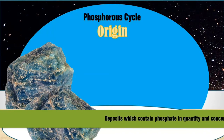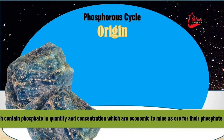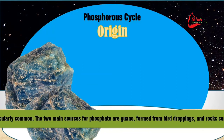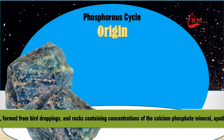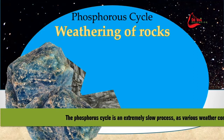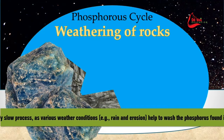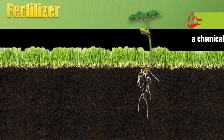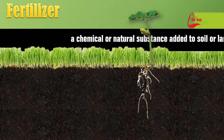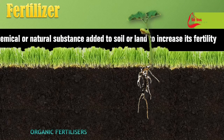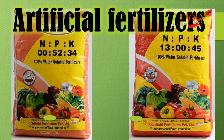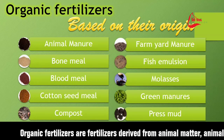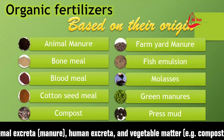An important cycle in the lithosphere is the phosphorus cycle. Deposits containing phosphate in quantities and concentrations that are economic to mine as ore are actually quite rare. The two main sources for phosphate are either guano — ore formed from bird droppings — or rocks containing concentrations of calcium phosphate in the form of apatite. The phosphorus cycle is extremely slow and various conditions are necessary for phosphorus to be washed into certain areas. Phosphate is one of the most important chemicals in our energy-carrying systems, meaning all plants and animals need it. This is why farmers often have to use fertilizers to enrich their soil with phosphate, nitrogen, and potassium. You can use either artificial fertilizers or organic fertilizers, and organic fertilizers are usually the richest in phosphate content.